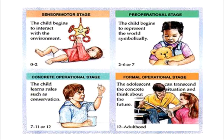Stage 2 is the pre-operational stage, from 2 to 7 years. The most obvious change is the increase in mental representation in the child. The child gradually develops use of language and the ability to think in symbolic form. They are able to engage in one-directional operational thought. Egocentrism — that is, difficulty in understanding other points of view — is the key feature of this stage.